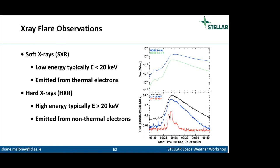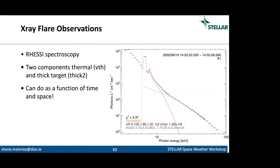This is an example RHESSI spectrum: photon energy in keV versus photons per cm² per keV per second. We fit the observed spectrum to a model, and the model parameters give us the non-thermal electron parameters — basically the spectral indices P and Q, the energy break, and related parameters. What's amazing with RHESSI is that we can do this as a function of space and time, getting information on the underlying electron distribution spatially and temporally — that's RHESSI spectroscopy.